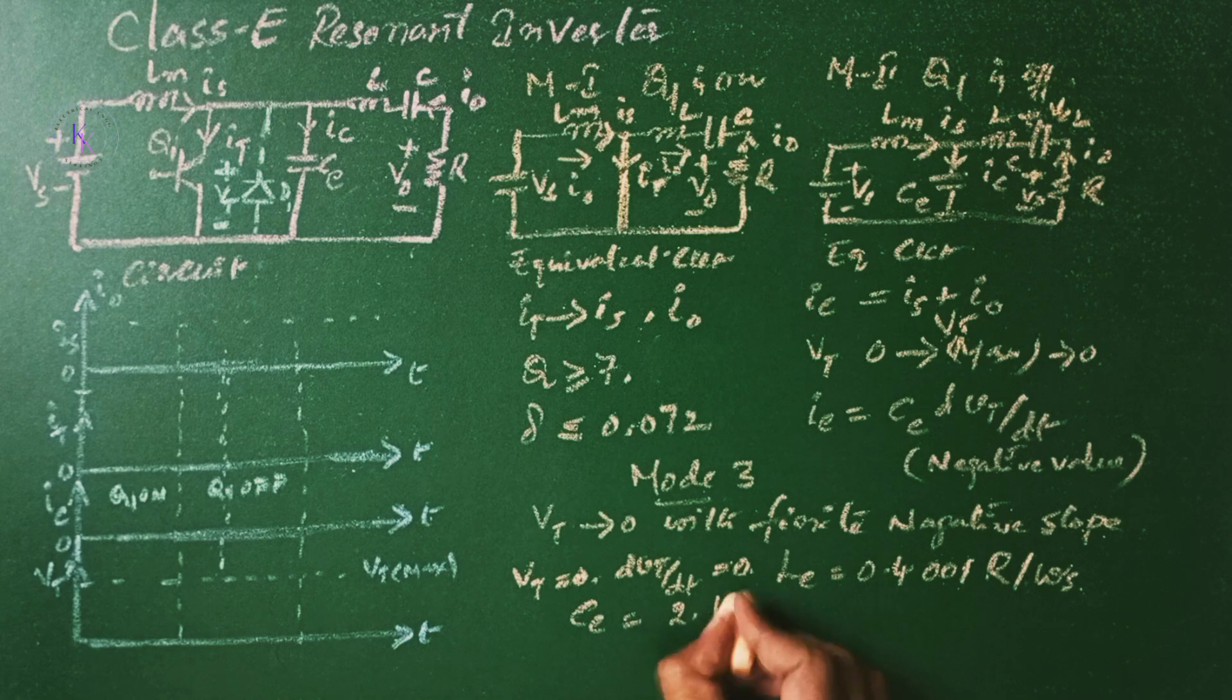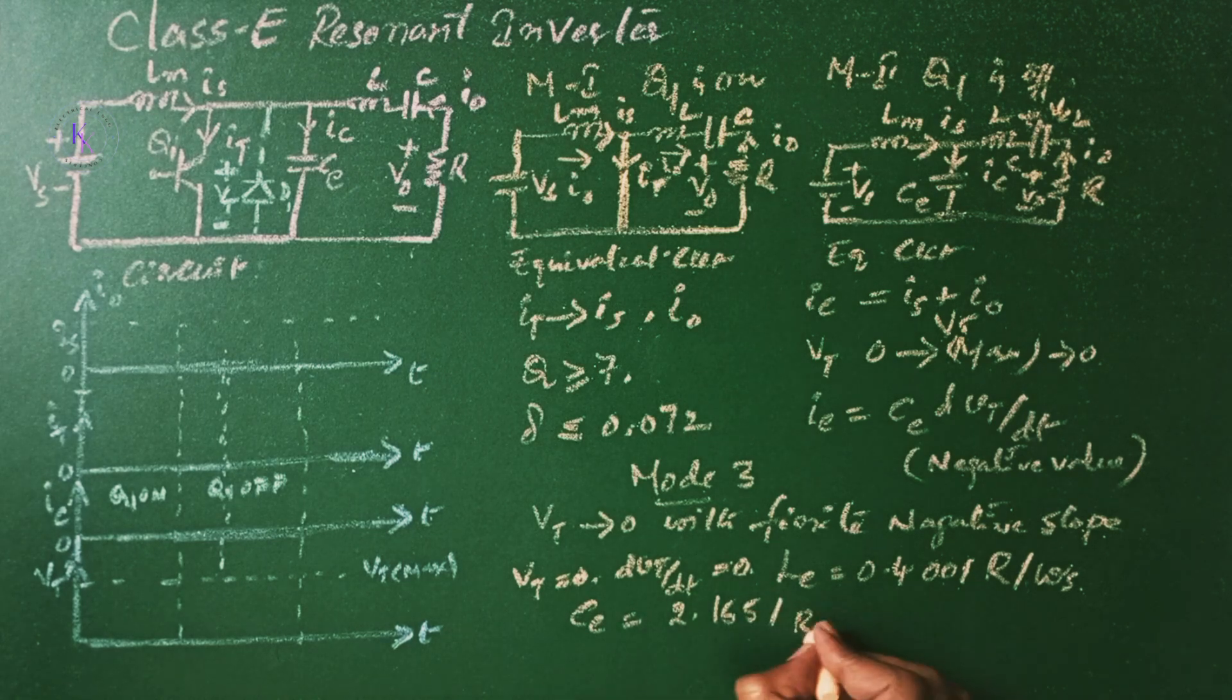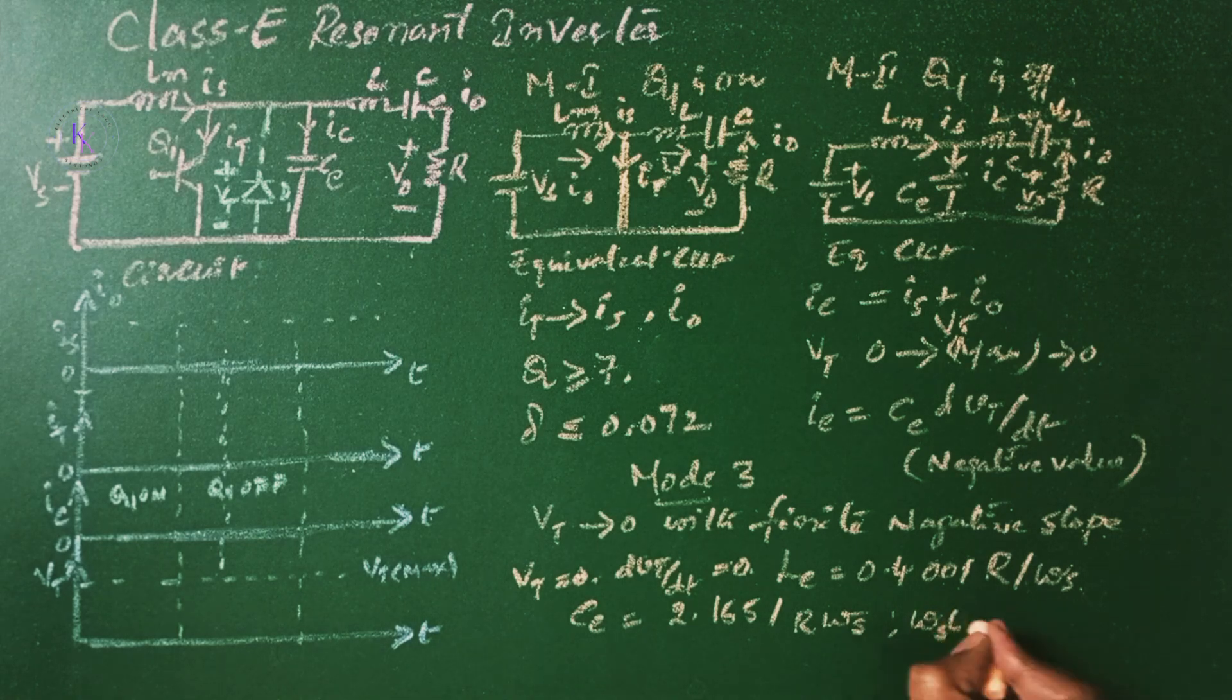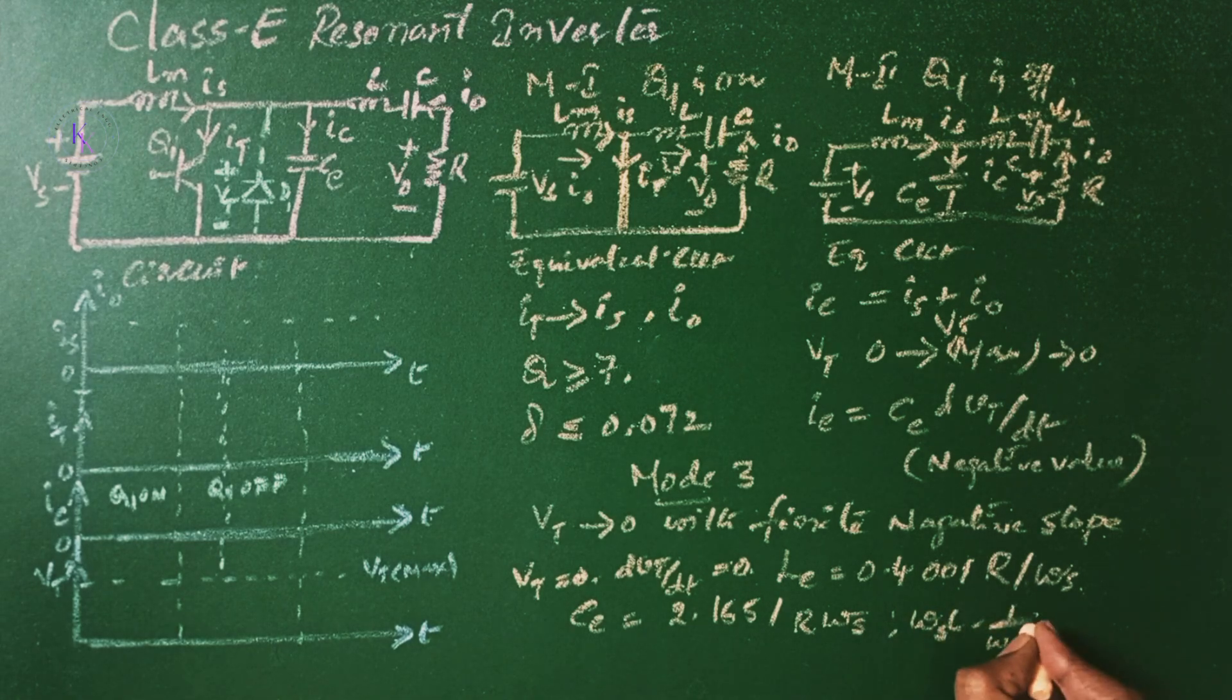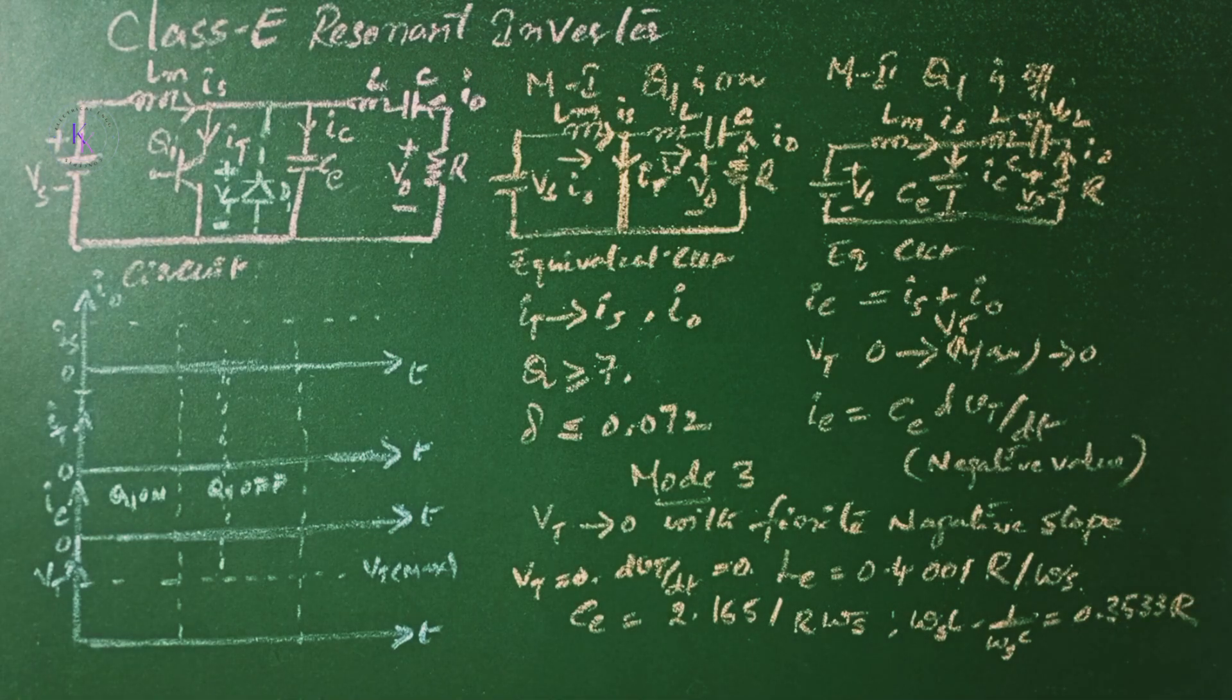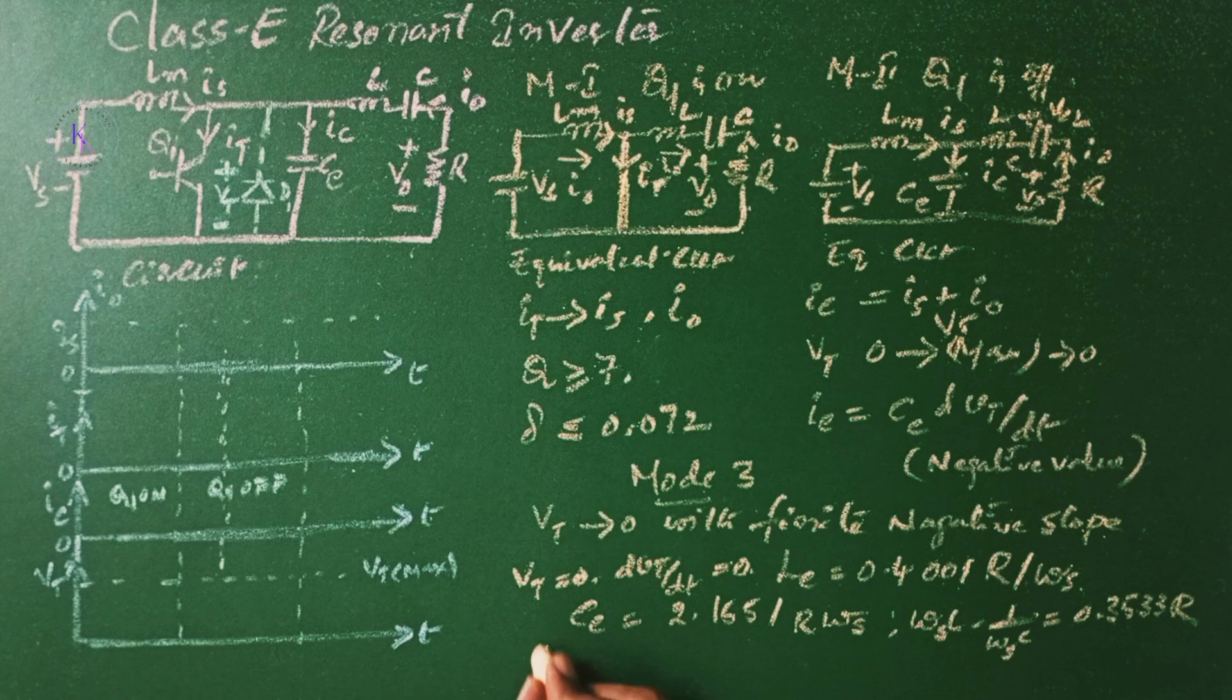Then omega s L minus 1 by omega s C equals 0.3533R, where omega s is the switching frequency.